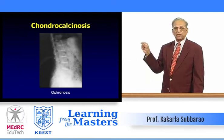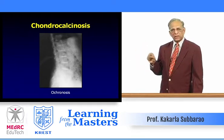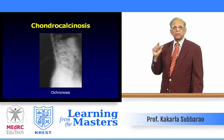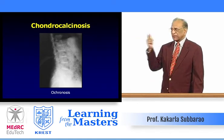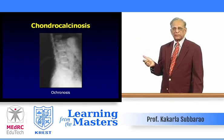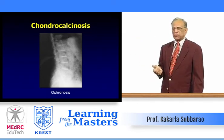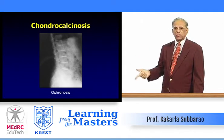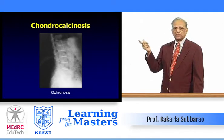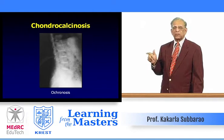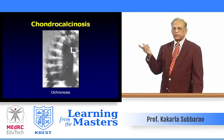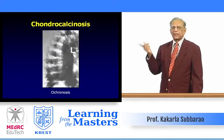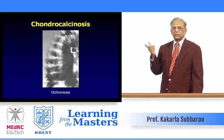Disc cartilage calcification: in elderly people, calcification of the disc or nucleus pulposus may occasionally be found, but when combined with osteoporosis it is the hallmark for diagnosis of ochronosis. Another case in the thoracic spine shows osteopenia and calcification of the nucleus pulposus.